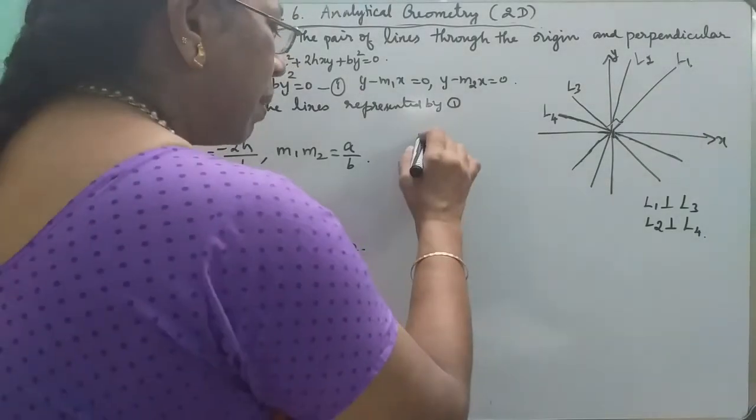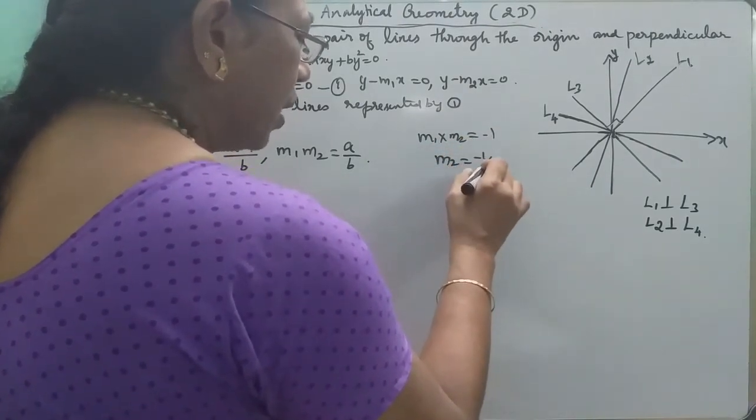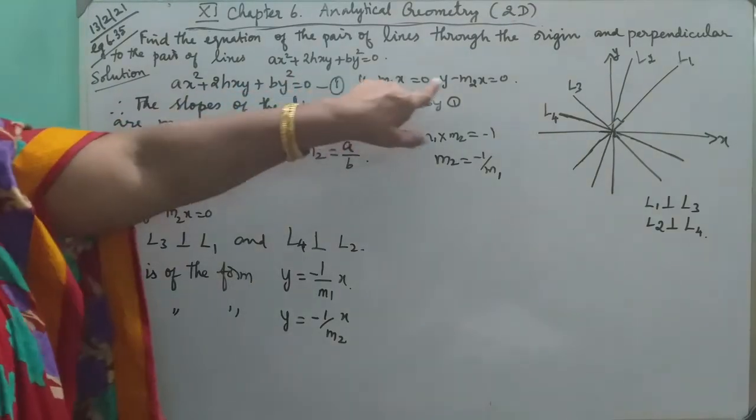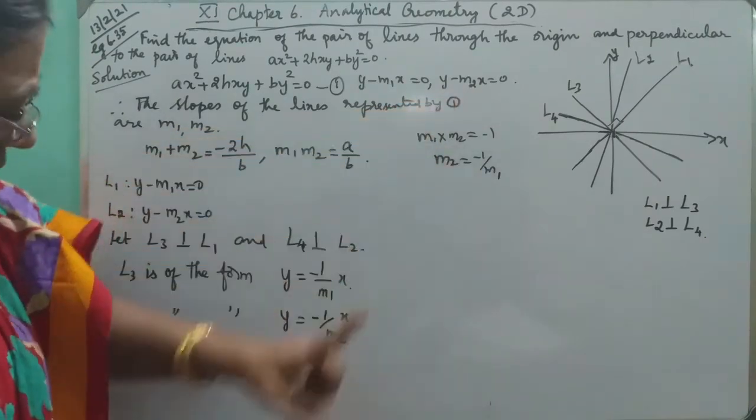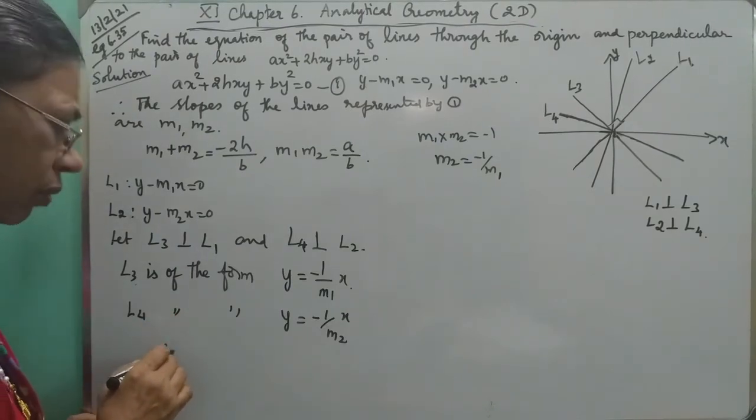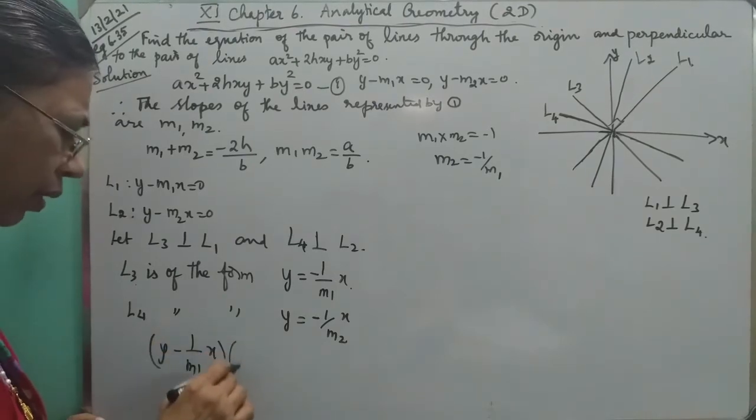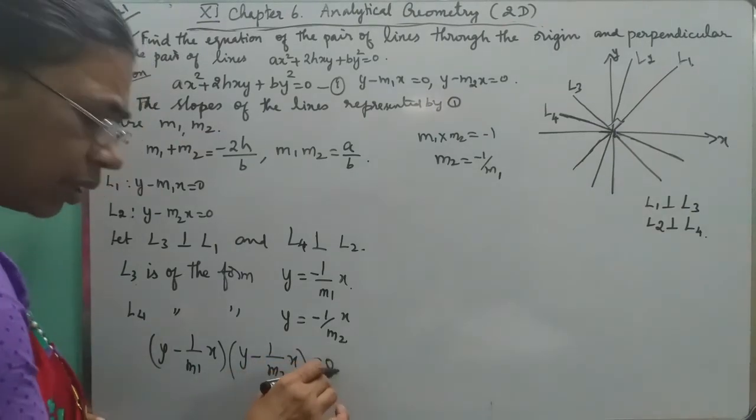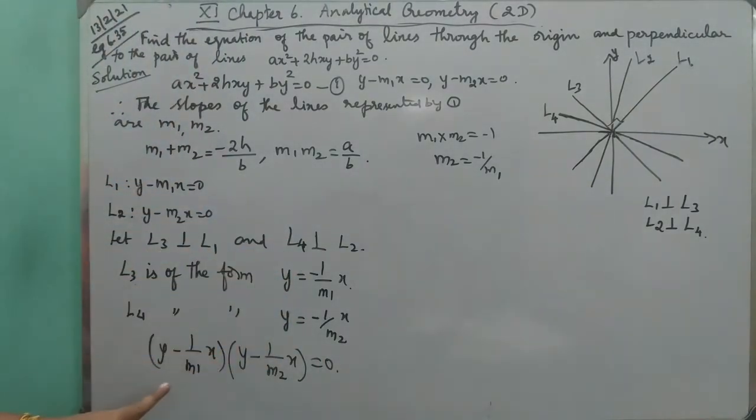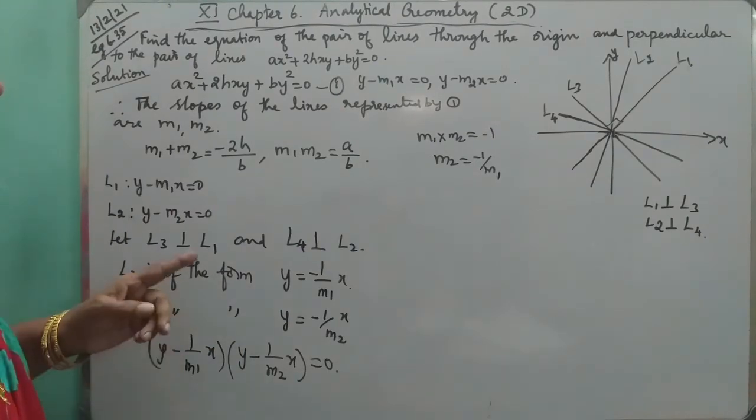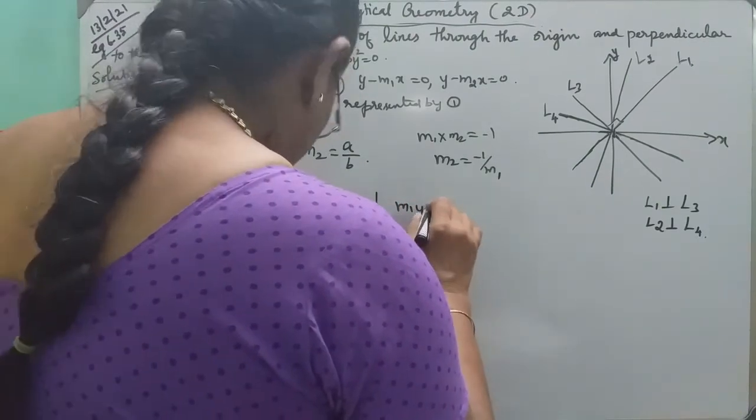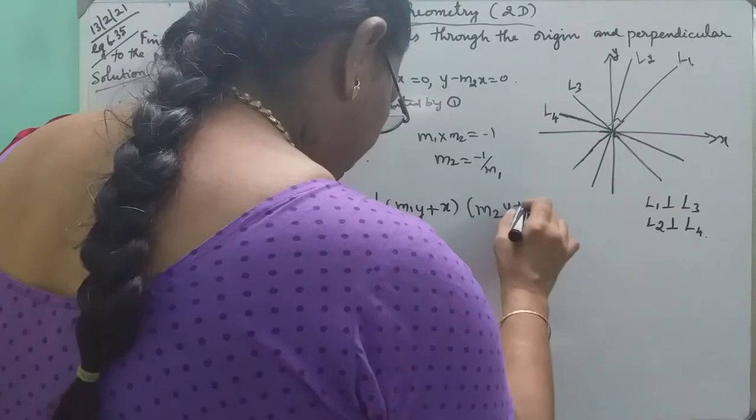This one is L1 line, this one is L2 line. This one is L3 and this one is L4. Now we have to multiply: y minus 1 by M1X into y minus 1 by M2X equal to 0. LCM: M1Y plus X into M2Y plus X equal to 0.